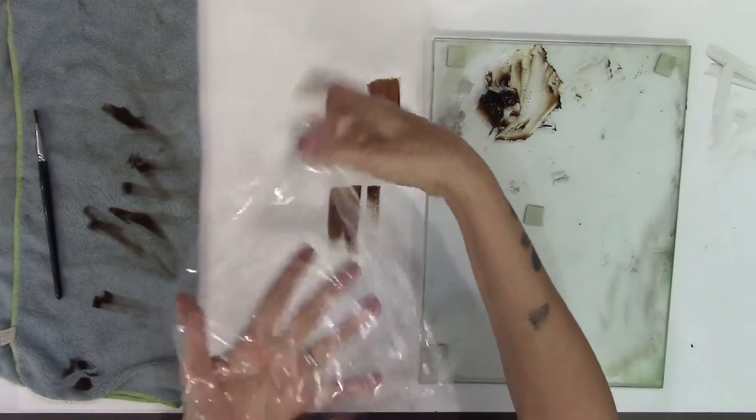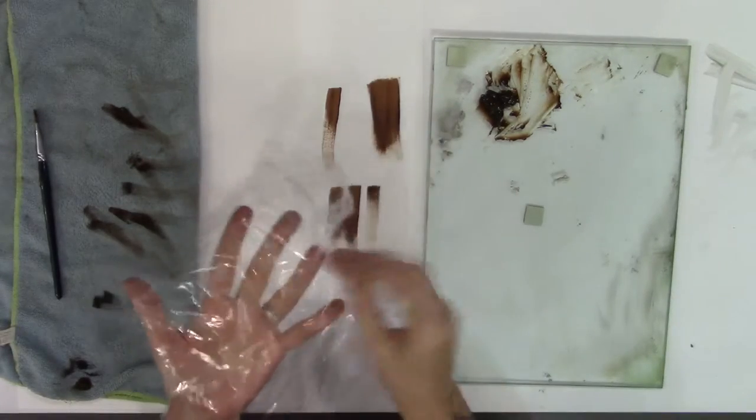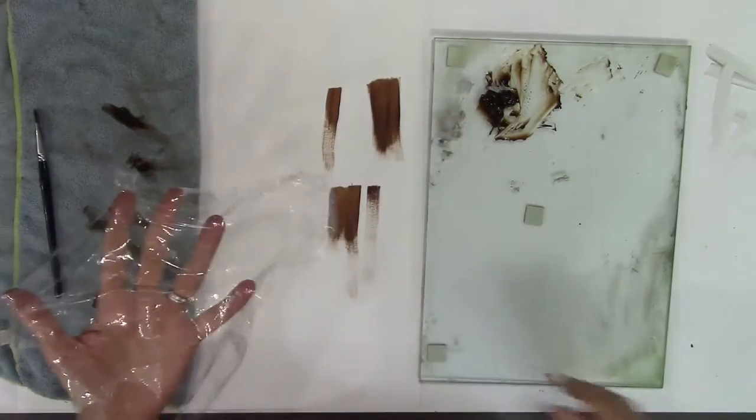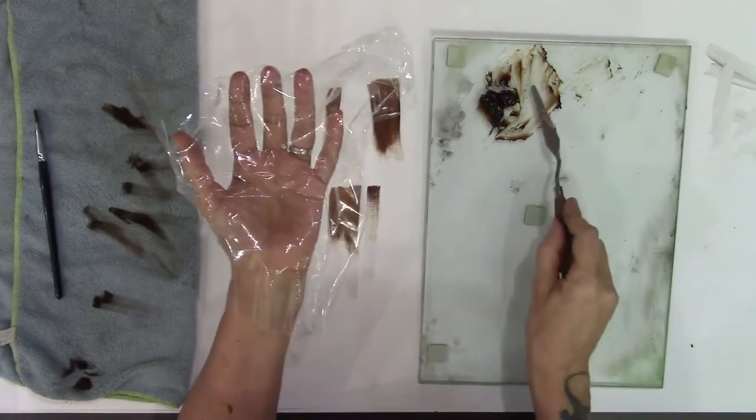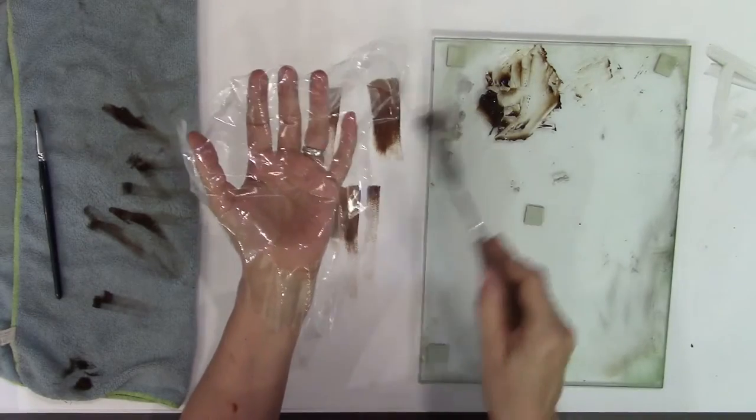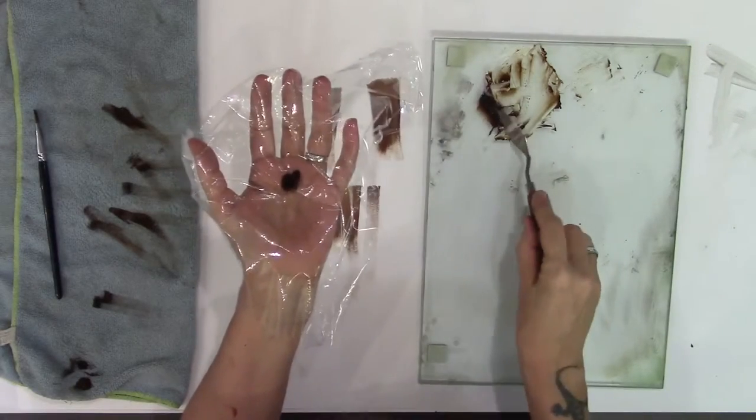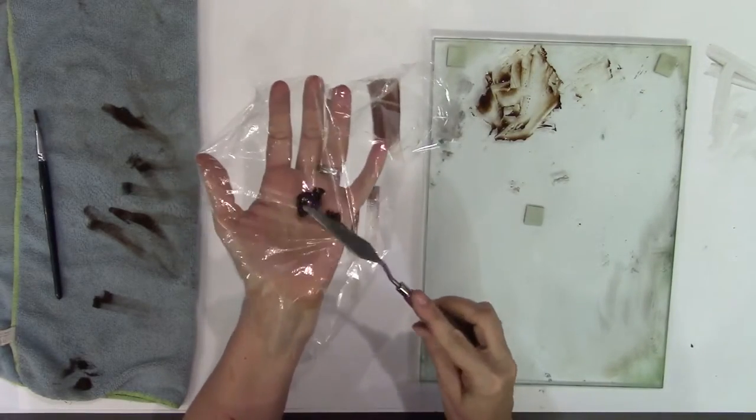Now in South Africa we call it cling film. You guys might call it sandwich wrap, but it's that plastic that sticks to itself. So I'm sure you'll know what I'm talking about. Make a little depression in the palm of my hand, pick up my blob of paint, put it in there.